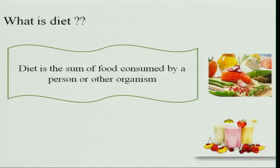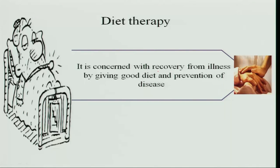What is a diet? A diet is the sum of food consumed by a person or any organism — whatever food we consume is the diet. Diet therapy is concerned with recovery from illness by giving a good diet. Therapeutic nutrition is the clearing of disease using food. You can prevent disease by giving a nutritionally adequate diet, or cure it by giving the required nutrient in extra amounts or reducing specific nutrients — this modification of diet is called diet therapy.